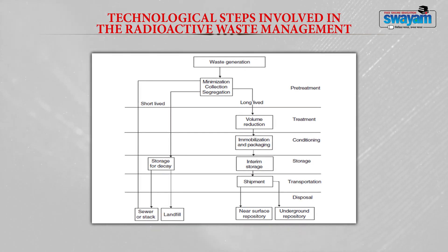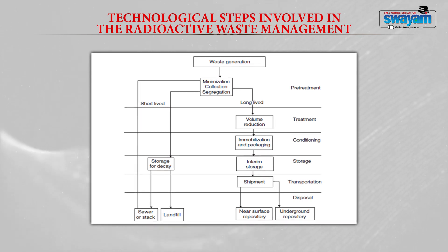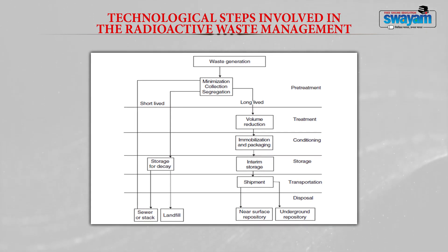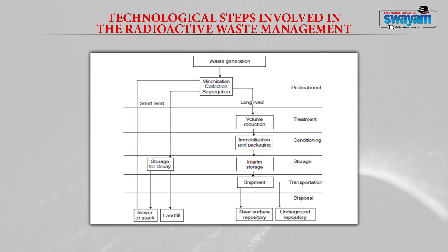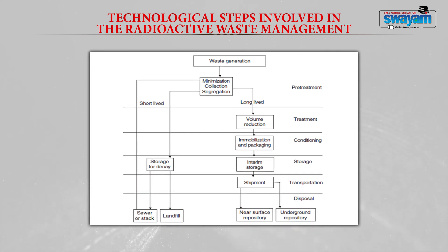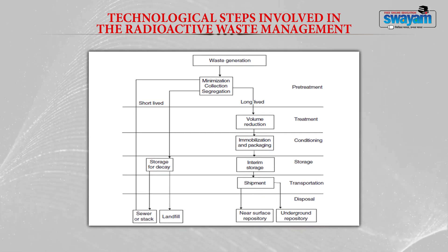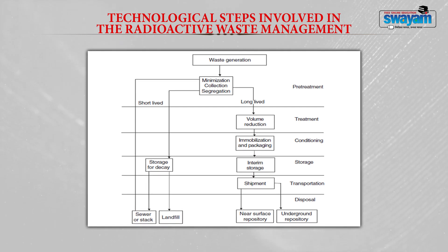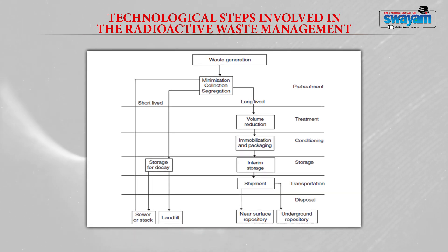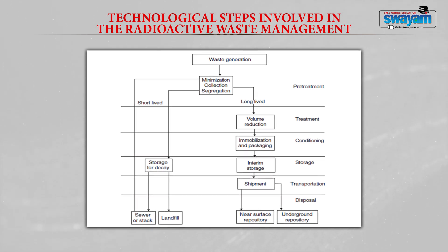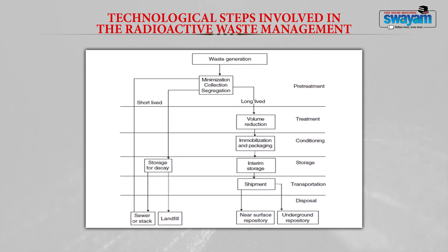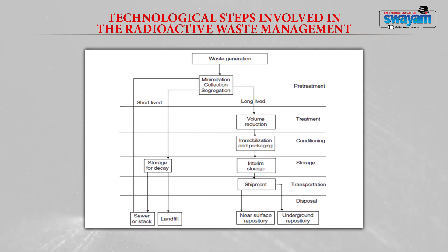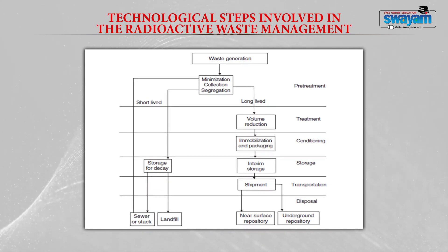First, when waste is generated, we go for minimization, collection, and segregation of the waste — topics covered in the previous module. During segregation, radioactive waste is divided into two classes: short-lived radionuclides, having smaller half-lives, and long-lived radionuclides, having longer half-lives. These steps fall under pre-treatment of radioactive waste.